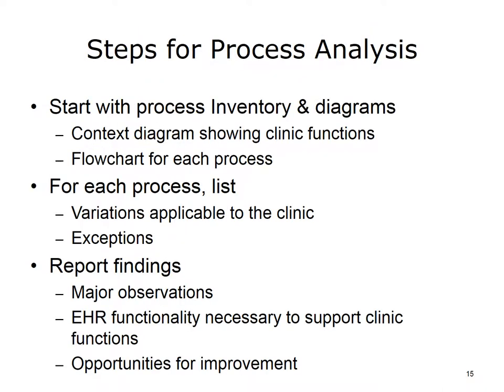In summary, a main part of process analysis is creating an inventory of processes that a practice uses and identifying the variations of those processes employed by the practice and the likely exceptions. These things together help identify the EHR functionality. Start with the process inventory and diagrams. Include context diagrams showing clinic functions and flowcharts for each process. For each process, list the variations applicable to the clinic and all exceptions. Finally, report findings such as major observations, EHR functionality necessary to support clinic functions, and opportunities for improvement to the management.